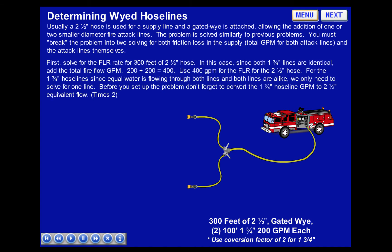First, solve for the friction loss rate for 300 feet of 2.5-inch hose. Since both 1¾-inch lines are identical, add the total fire flow GPM: 200 plus 200 equals 400. Use 400 GPM for the FLR calculation for the 2.5-inch hose.